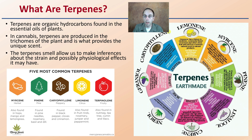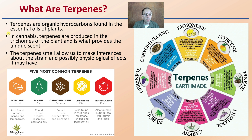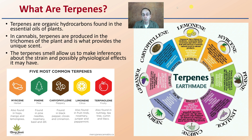So what are terpenes in a general sense? Terpenes are organic hydrocarbons found in the essential oils of plants. Cannabis terpenes are produced in the trichomes of the plant — it's what provides the unique scent. The terpene smell allows us to make inferences about the strain and possible physiological effects it may have. The five most common are often displayed on terpene wheels for organized comparison, and more will be described in detail in other DeBacco University videos.